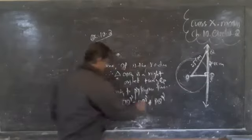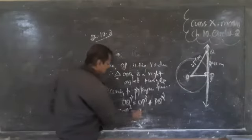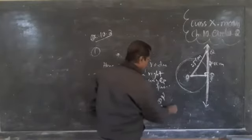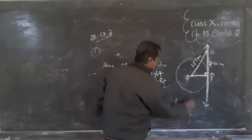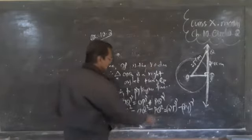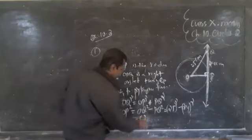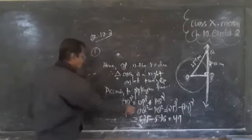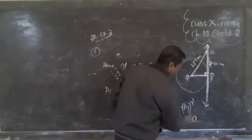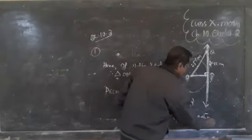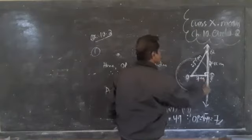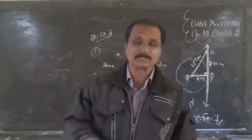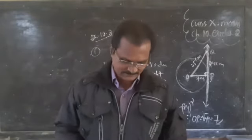We need to find OP, so OP² = OQ² − PQ² = 25² − 24² = 625 − 576 = 49. Therefore OP = √49 = 7. The radius of the circle is 7 centimeters, which corresponds to option A — 7 centimeters.